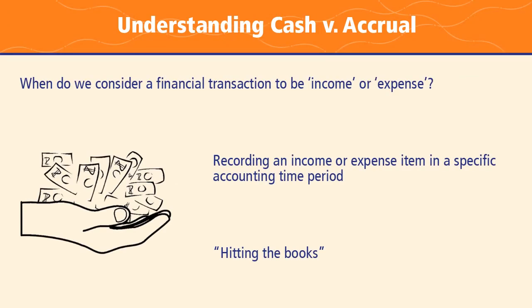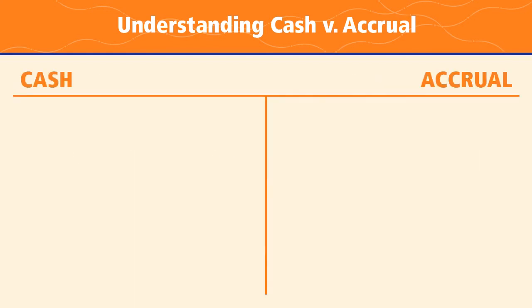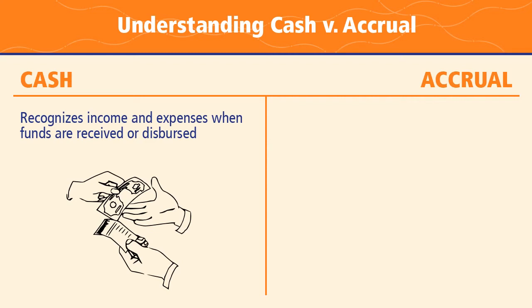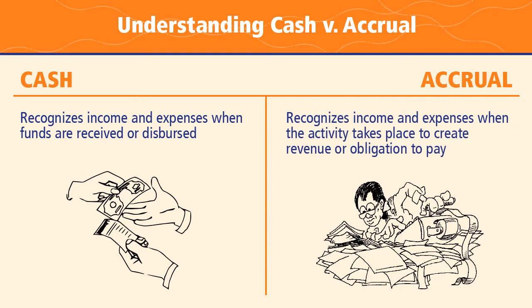The first key difference between cash versus accrual accounting is when we consider an expense to actually have taken place or when income is to be recorded — called hitting the books. In cash accounting, you recognize an expense or income when you actually get the funds or when you actually pay a bill, very much like your checking account. But the accrual system recognizes income and expenses as soon as you have an obligation recorded, even if cash hasn't transacted yet — you know it's going to, so you start planning immediately.